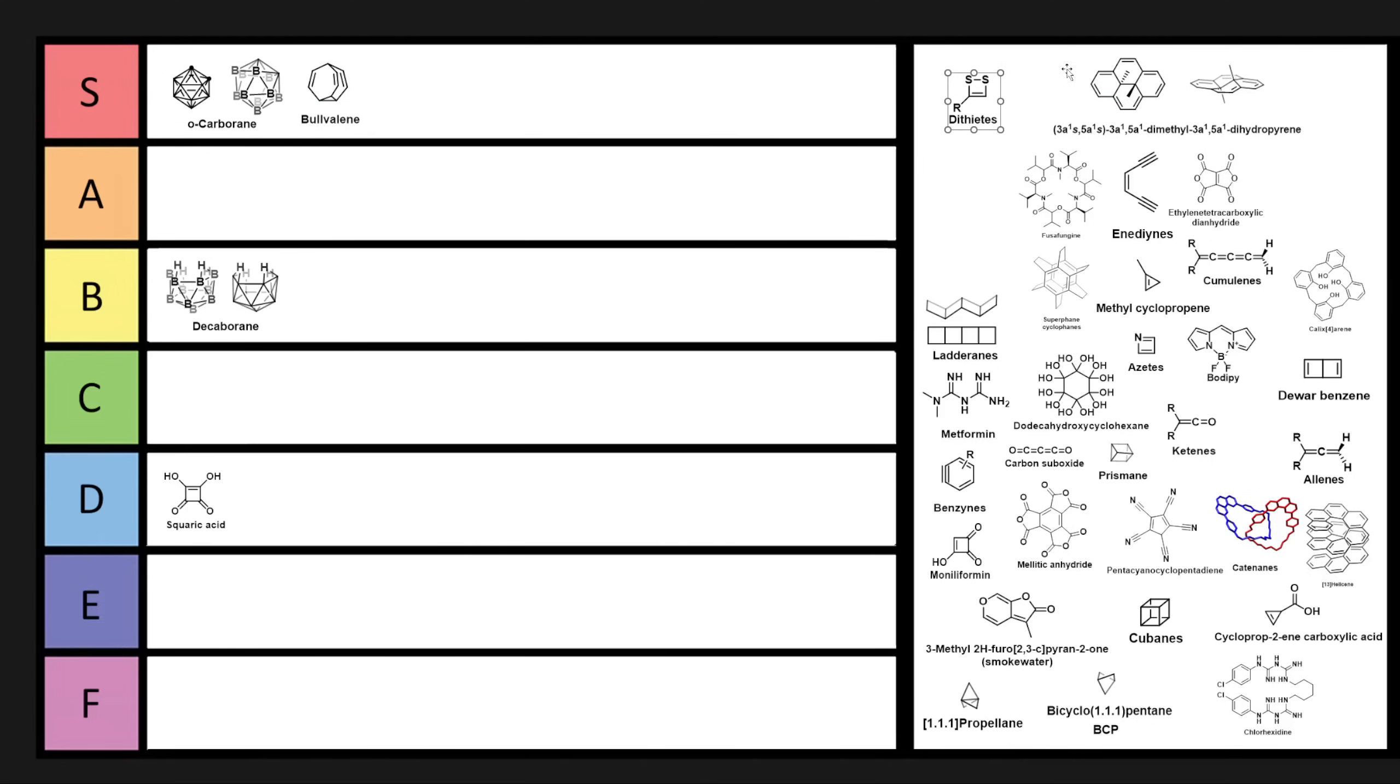Now, one that's kind of close to home for me is dithiates. So dithiates are this interesting four-membered ring where we still have a double bond as well. And sometimes if you have a 1,2-dithiocarbonyl compound, you'll actually form dithiates. And so I've inadvertently, at one point in time, made a dithiate derived from an alpha-ketoamide, which then ended up forming this dithiate. They're relatively few and far between, but they're a very interesting molecule. However, they're still relatively boring, so I think we're going to have to put them in E-tier.